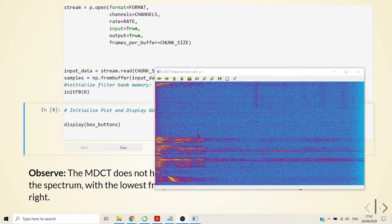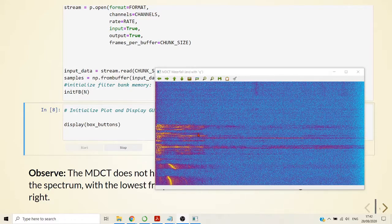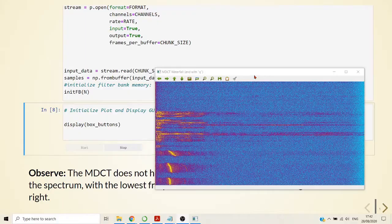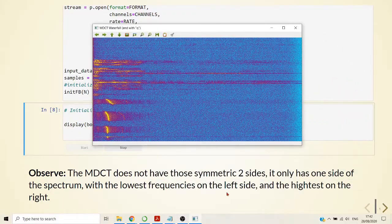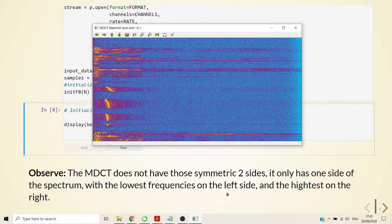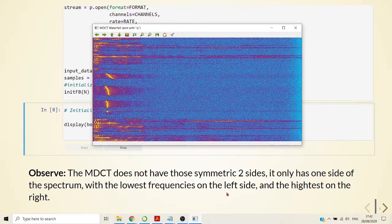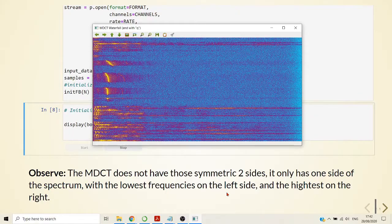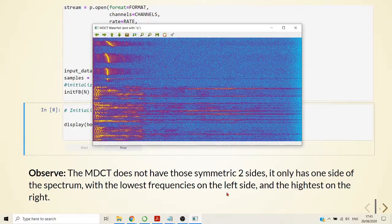And we have here our MDCT in the fast implementation. Observe that the MDCT does not have those two symmetric sides. It only has one side of the spectrum.